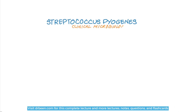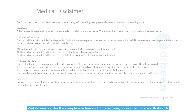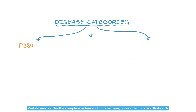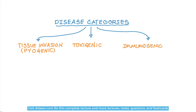Let's now move on to the diseases caused by this pathogen so that we can understand what can be possible by these bacteria. Diseases caused by Streptococcus pyogenes can be divided into three main categories: diseases caused by Streptococcus directly invading the tissue and causing damage, diseases caused by the exotoxin coming from Streptococcus pyogenes, or diseases caused by the immune response of our body which in turn causes damage to the body.